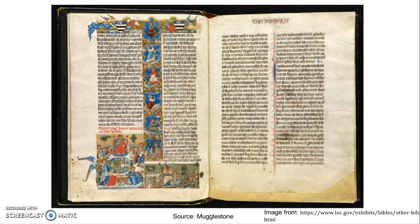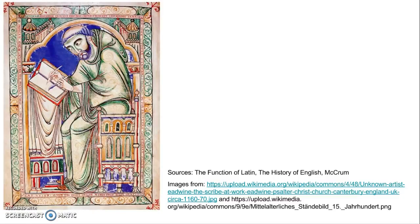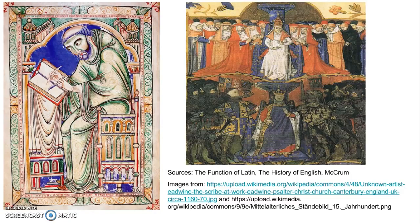Latin was an important part of Christianity at the time. It was the language of the church — services were in Latin, Latin was spoken in monasteries, and the Bible was written in Latin. The first literate Anglo-Saxons were educated by the Catholic Church, and to be literate essentially meant being fluent in Latin. So Latin was primarily used by church officials and wealthy, educated people. Roughly 400 Latin words that came into Old English from the conversion to Christianity can be found in our language today.